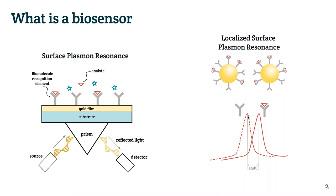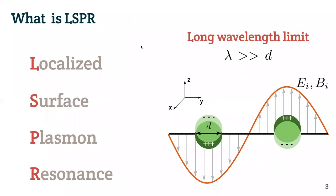A common type of biosensor is the one based on surface plasmon resonance, which uses a substrate with a gold film where they functionalize the surface with biomolecule components that will then recognize the analytes. Now, when we replace this gold film with small metallic nanoparticles, it's been shown that the sensitivity is much higher. This approach is interesting to us because on the field of localized surface plasmon resonance, it could be approximated by electrostatics under certain circumstances. So what is LSPR, or localized surface plasmon resonance?